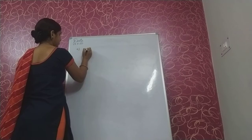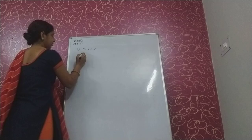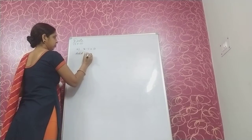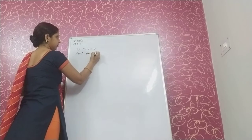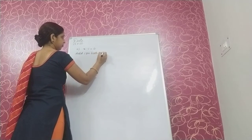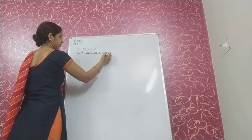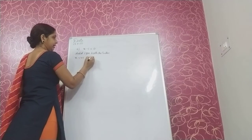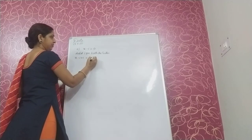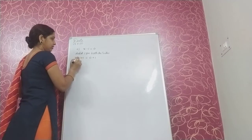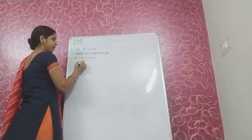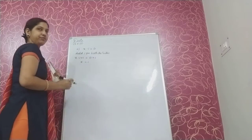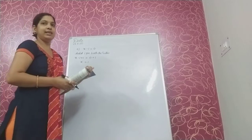First, x minus 1 equal to 0. So add 1 on both the sides. x minus 1 plus 1 and 0 plus 1. x minus 1 plus 1 becomes x and 0 plus 1 is 1. So the value of x is 1. This is the balancing method.